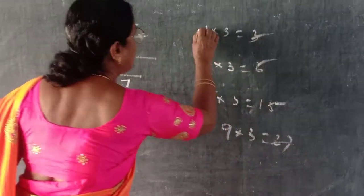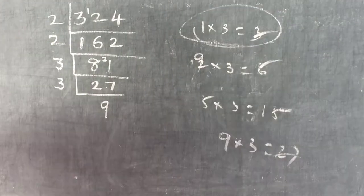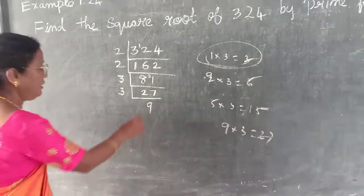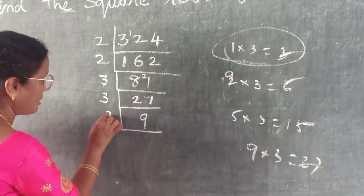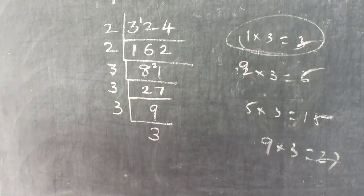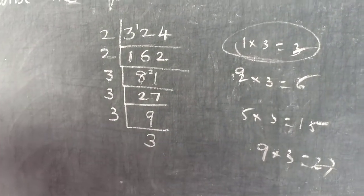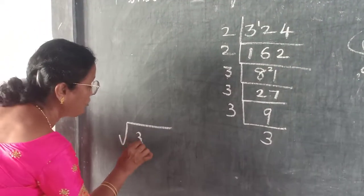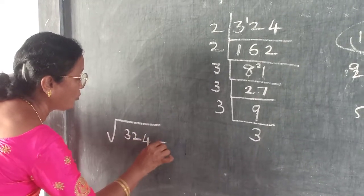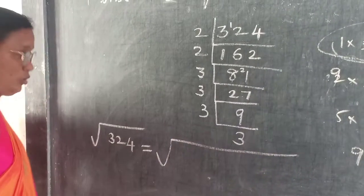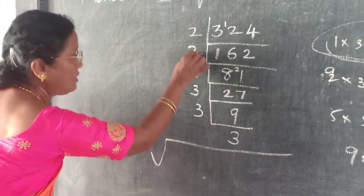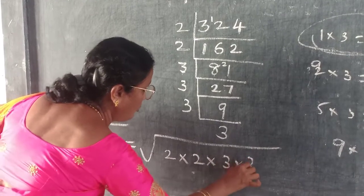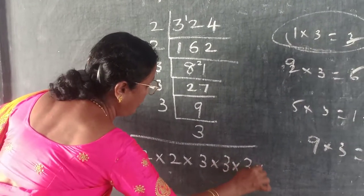At least these 4 you should know — everybody knows this, isn't it? At least these 3 things you should know clearly. Next: 9. What is it? 3 3's are 9. So, what are they asking? The square root of 324. What is the symbol you are using? Radical symbol — root of 324. So, root of: 2 into 2 into 3 into 3 into 3 into 3.